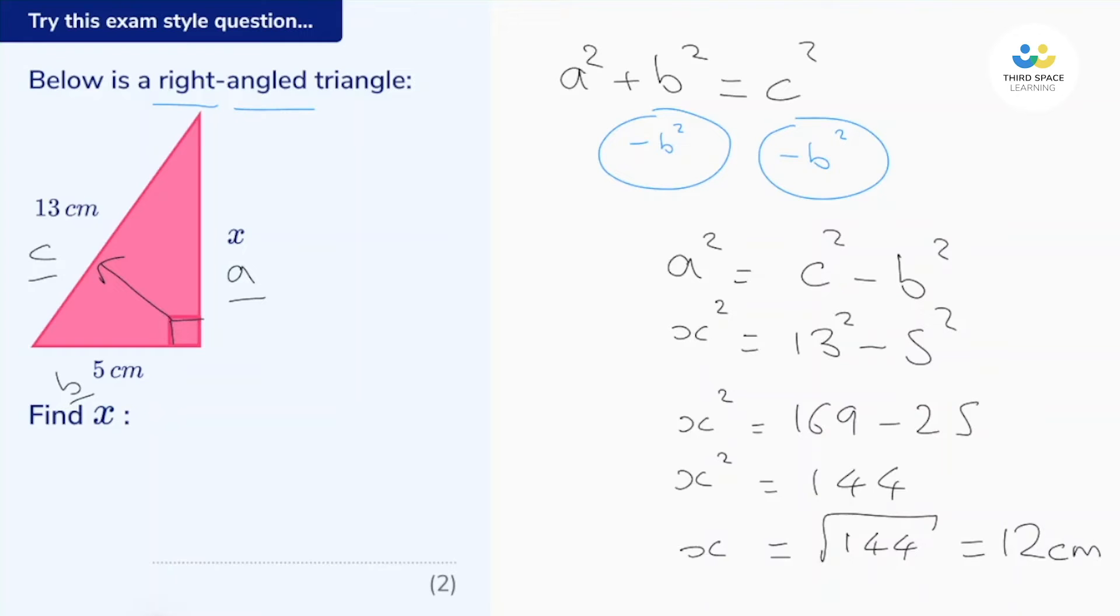Now a common mistake people make here is by taking away the 13 and the 5 in the wrong order. We need to make sure we always take away the shorter side from the longer side, because if we don't, we'll end up with a negative length, which is impossible. Quick check to make sure our answer is sensible. Now we wanted to work out one of the shorter sides, so 12 should be shorter than the longest side, which is 13, and it is. So that looks great to me, and we can pop that on the answer line: 12 centimeters. Let's see where the marks come from. So it's a two mark question. One mark is for correctly substituting the numbers into Pythagoras, and the second mark comes from the final answer.